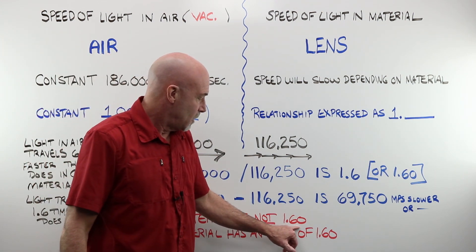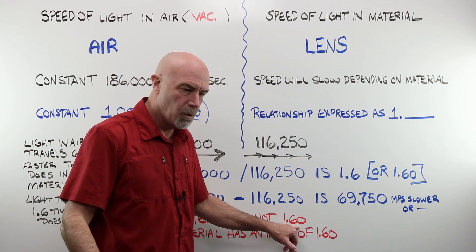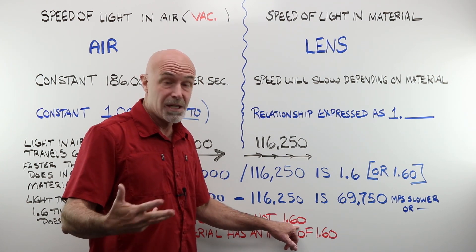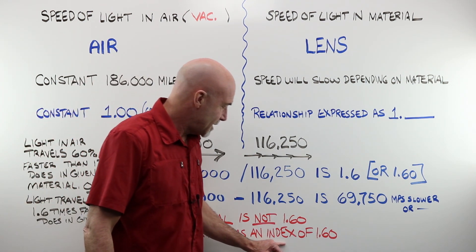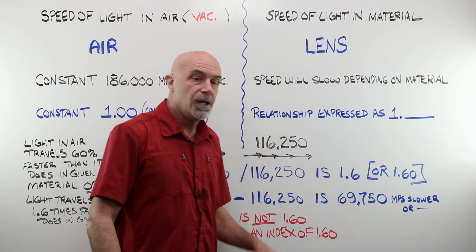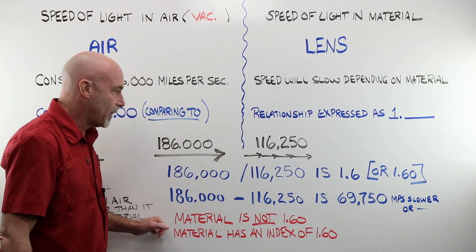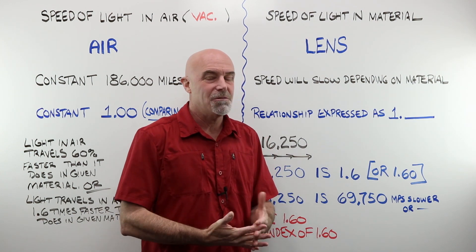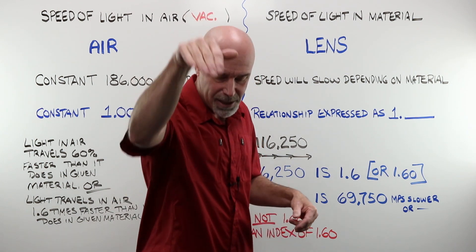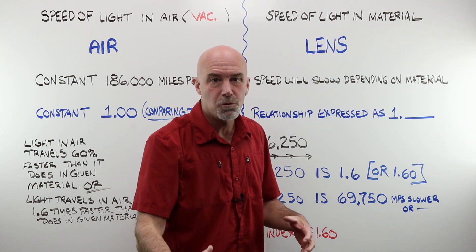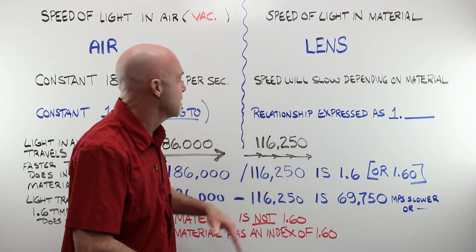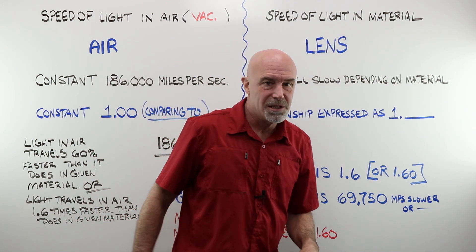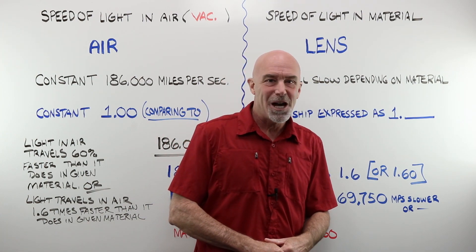The material is not 1.60. We do order it that way and say it that way. But think of Poly, think of CR39, think of Trivex — think of all those brand names and monomer names. It is a material that has an index of refraction of 1.60. Those are two very different things and you need to wrap your head around that. You may have noticed by now that I have not used the word density. It's so easy to think of it that way — you dive off a rock into the water and your body slows way down because the water is so much more dense than the air. That's what we're taught. We would normally say the speed of light slows because it enters the lens material which is denser. Well, it turns out that's not actually how it works.